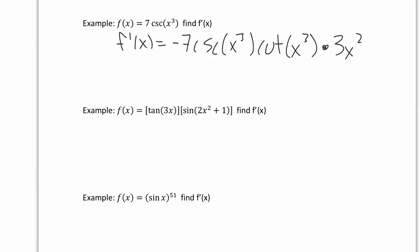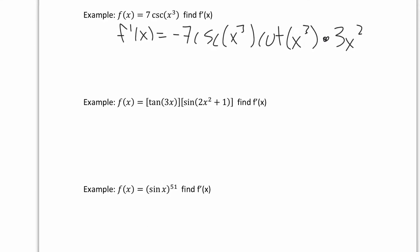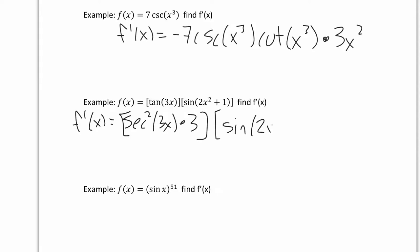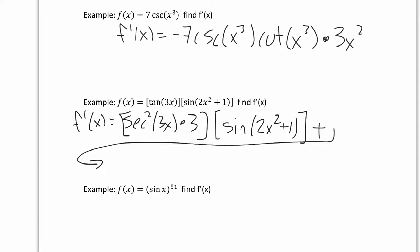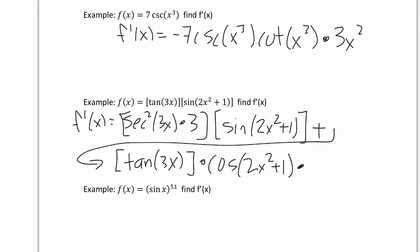Now, some combinations of rules. We could take two functions and multiply them together — a product rule — and that's exactly what we have here. We notice tan of 3x will require a chain rule, and sine of 2x squared plus 1 will also require a chain rule, and both functions are multiplied together. So f prime of x equals secant squared of 3x times 3 — the derivative of 3x — and the second function gets left alone, plus tan of 3x rewritten times the derivative of sine, which is cosine of 2x squared plus 1, times 4x.